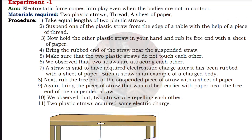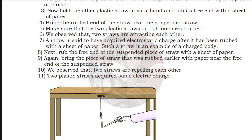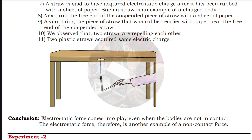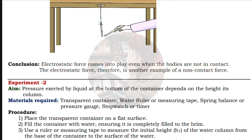The first experiment — make sure to cover all the side headings: aim, materials required (apparatus), procedure, and conclusion. The aim is: electrostatic force comes into play even when the bodies are not in contact. Write down each heading without any mistake, and draw the diagram carefully and neatly.